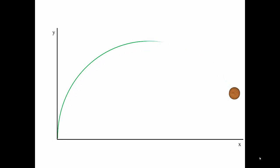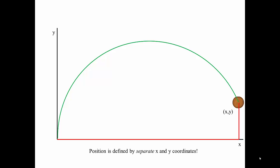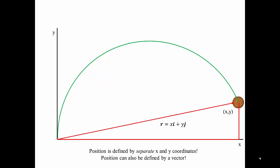When a ball moves through the air, we can characterize its motion by its path, but its position we look at with respect to its x and y coordinates. For example, a ball is at position x and position y. Our position is defined by separate x and y coordinates. We can also define that position using a vector: r is equal to x·i plus y·j.